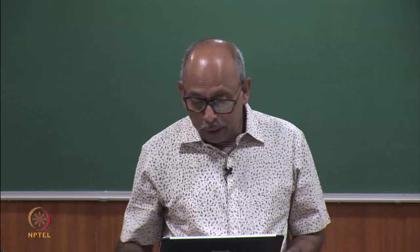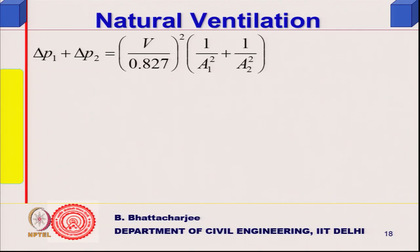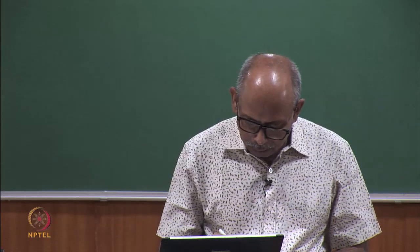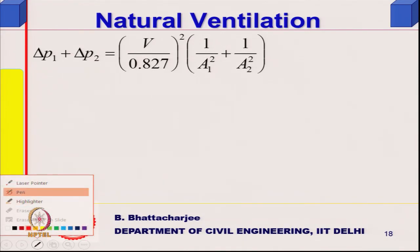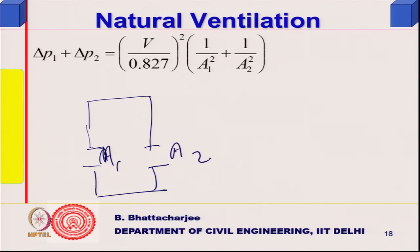We were looking at natural ventilation and came to the conclusion that when I have two windows or two openings in series — one opening here with area A1 and one opening there with area A2 — we need to find the equivalent airflow through them.